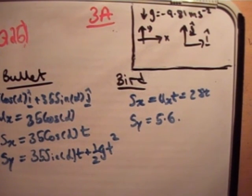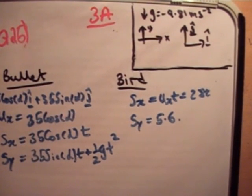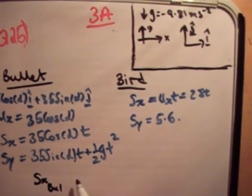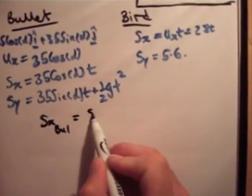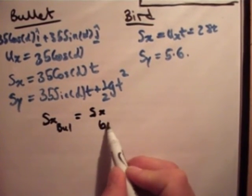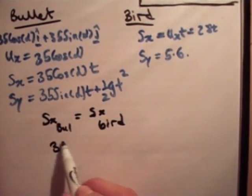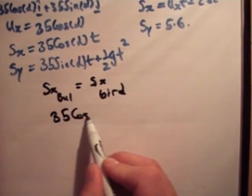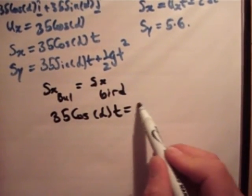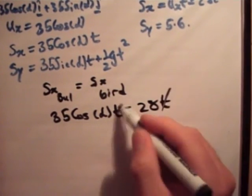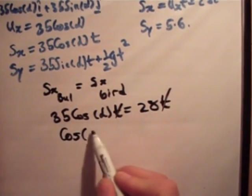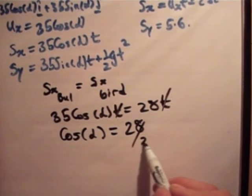I'm going to take it with the x direction first. We know that s sub x bullet is equal to s sub x bird. Therefore, 35 cos alpha t equals 28t. Cancel the t's, and cos alpha is equal to 28 over 35.